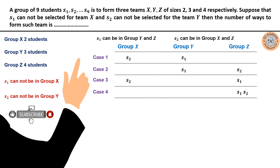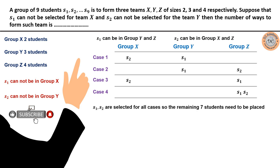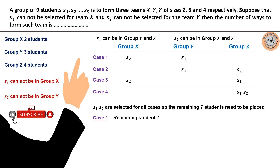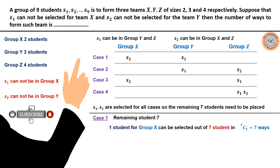For Case 1, S1 is in group Y and S2 is in group X. Since S1 and S2 are already placed, there are seven remaining students. Group X already has S2, so only one more student is needed; this can be chosen from the seven remaining students in 7C1 = 7 ways.